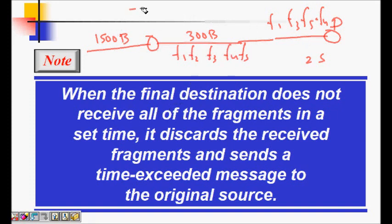So this is another problem. Time exceeded ICMP error message will be the same, but the subcategory will be different. The code will be different, so that you can find is it due to fragmentation or is it due to TTL value becoming zero.